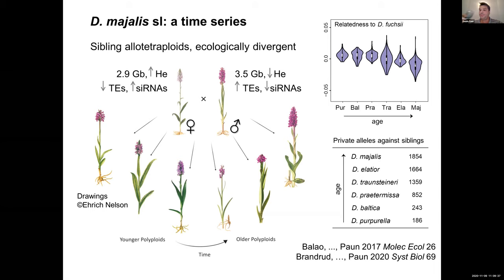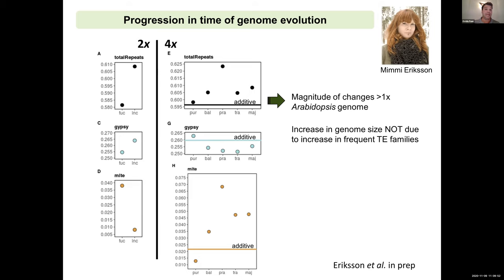All these analyses — comparing relatedness to each parent and comparing private alleles among sibling ages — provided consistent results. We can use this series of polyploids with different ages as replicates to understand how different processes progress in time, such as genome evolution. This is data analyzed by one of the PhD students in my group, Mimi Eriksson, who is looking at genome size and trying to quantify the number of total repeats.